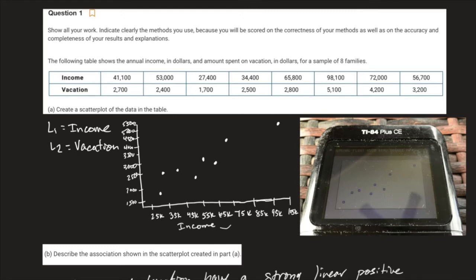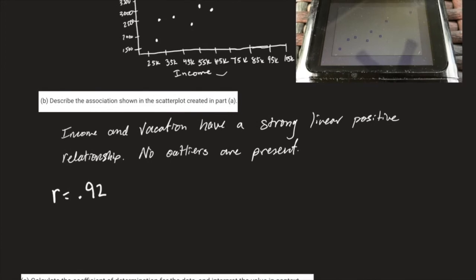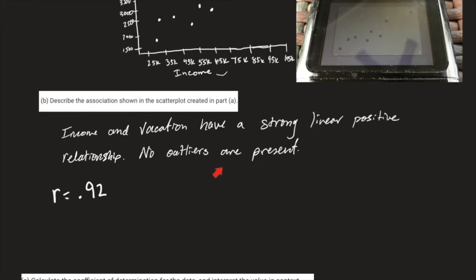Moving on to part B: describe the association shown in the scatter plot created in part A. I'm looking for four things — the relationship needs to be strong, it needs to be linear, it needs to be positive, and I need to comment on the fact that no outliers are present. I listed the R value here as evidence for saying 'strong,' and our R value was very high, so we have a strong relationship.